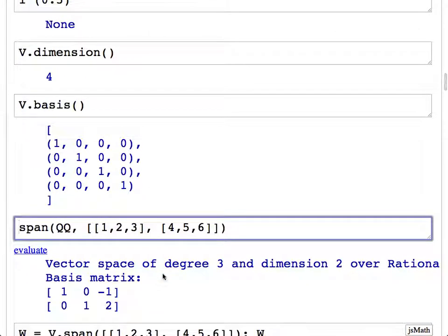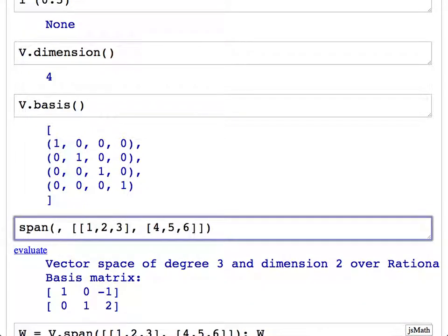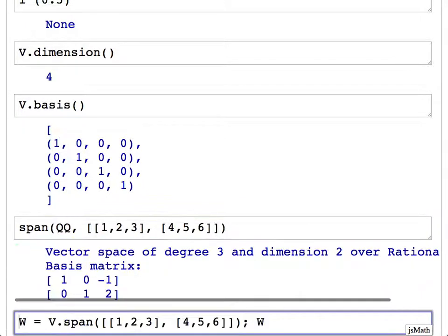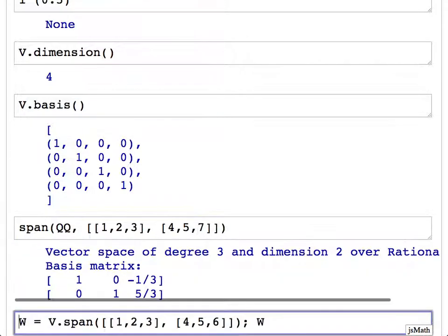You can ask for the span of some vectors. You can give them explicitly as vectors or as a list of lists, which might be easier to type. This is the span over Q of the vectors defined by these two things. You could give a different field here if you wanted, such as the field of order 2, and you might get something different. It reduces all the numbers modulo 2. It puts it in reduced row echelon form.